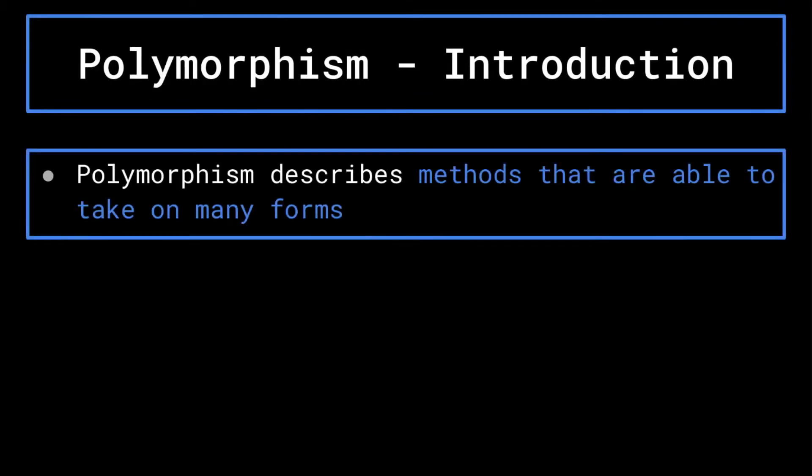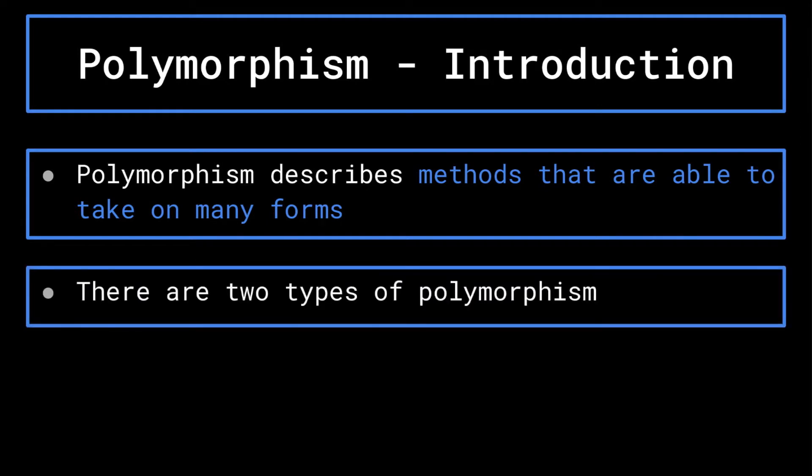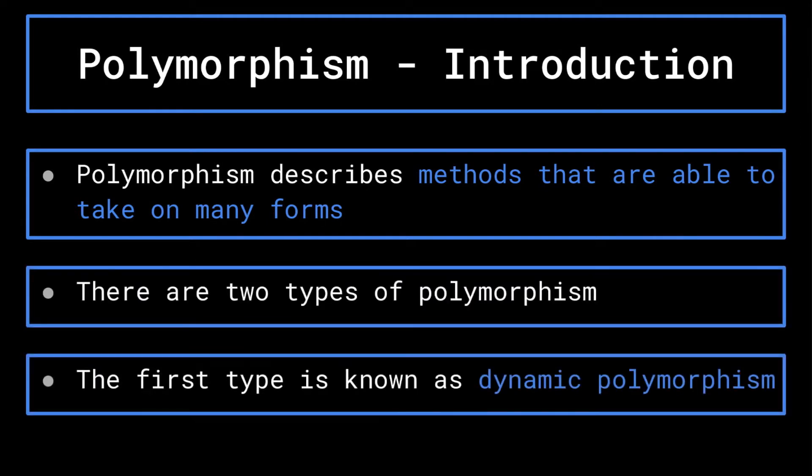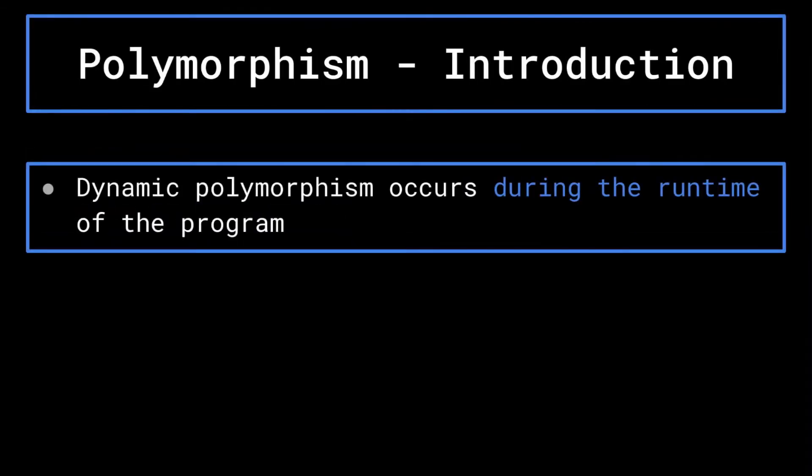Polymorphism describes methods that are able to take on many forms. There are two types of polymorphism. The first one is called dynamic polymorphism. Dynamic polymorphism occurs during the runtime, or when the program is being executed.